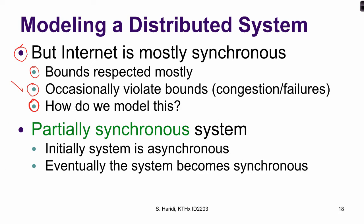Another model is the so-called partially synchronous system. It is a system which is initially asynchronous — we don't know anything about transmission, computation steps, or latency. But eventually the system becomes synchronous, meaning it respects some bounds on communication latency and computation steps. Most real systems would have phases: a stable period followed by an unstable period. Partially synchronous systems describe a phase that starts with an unstable period and then moves to a stable period.